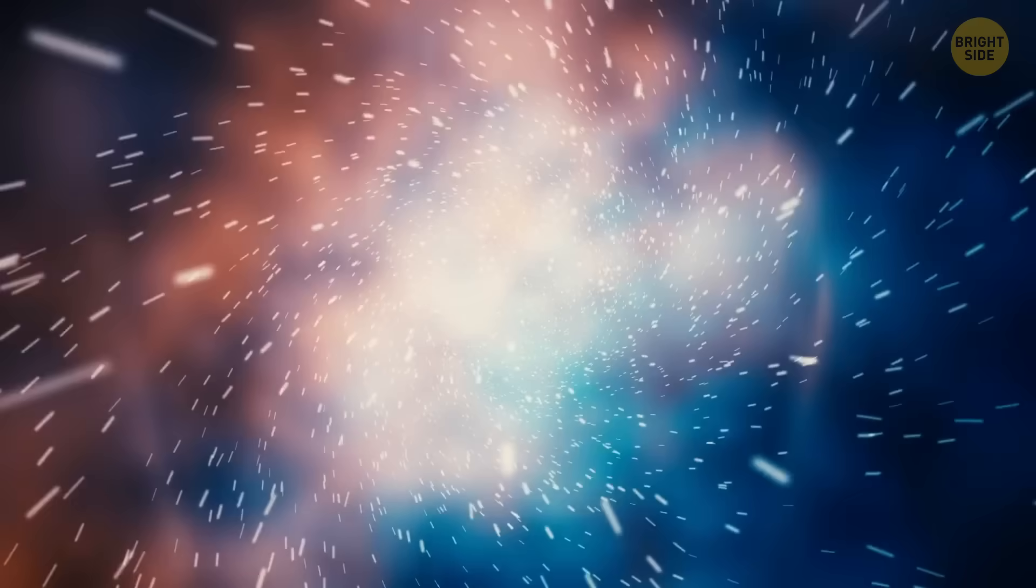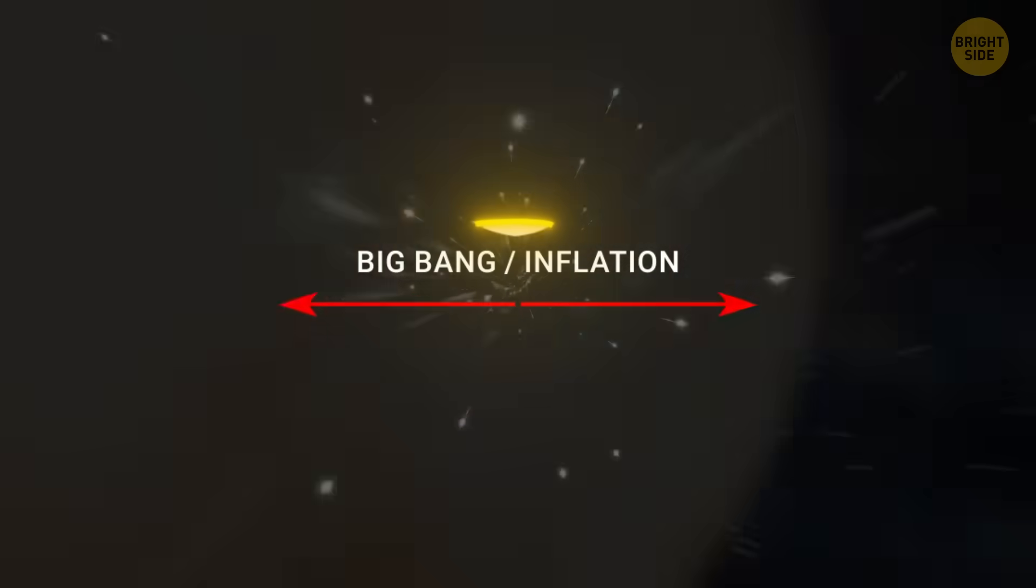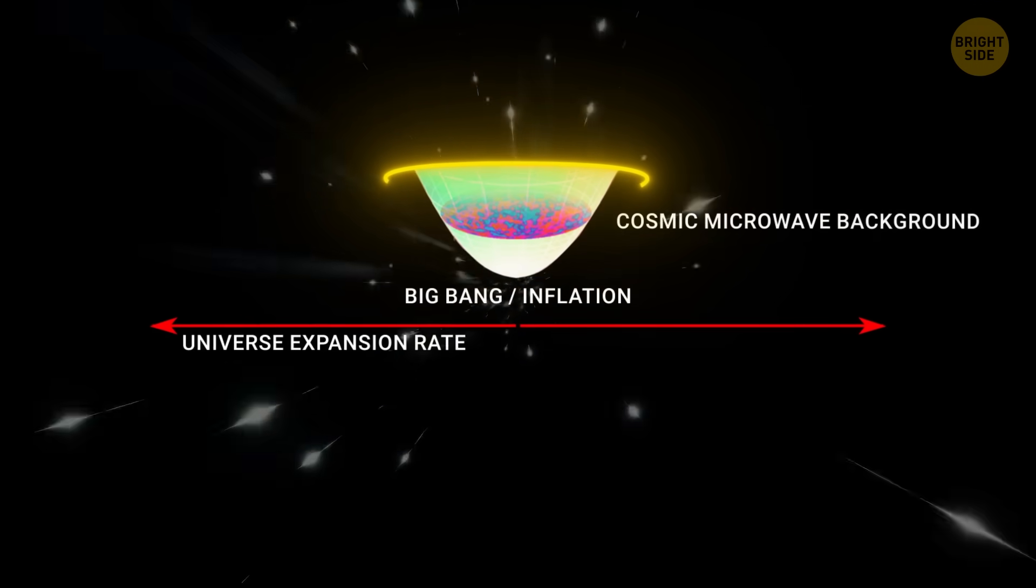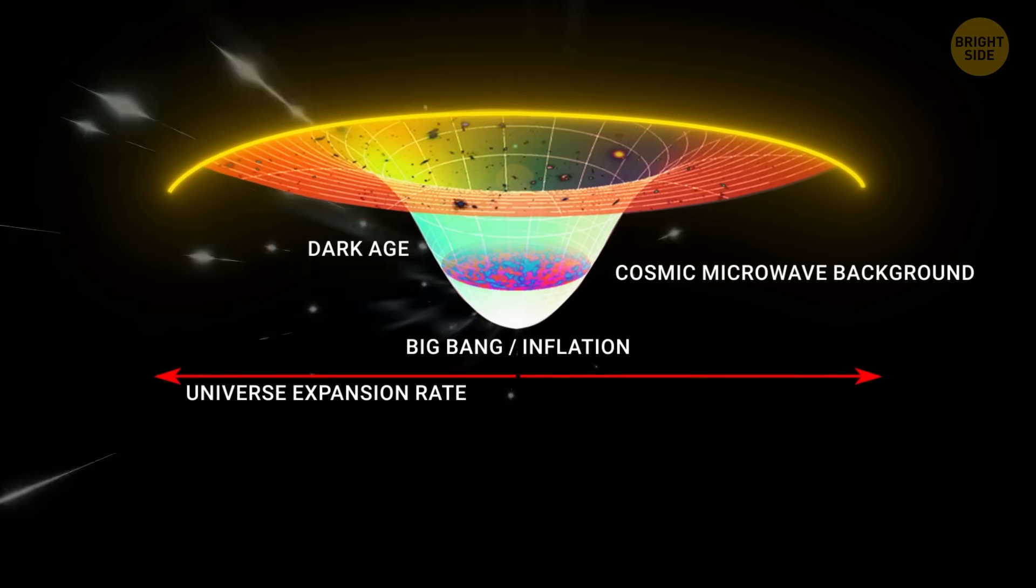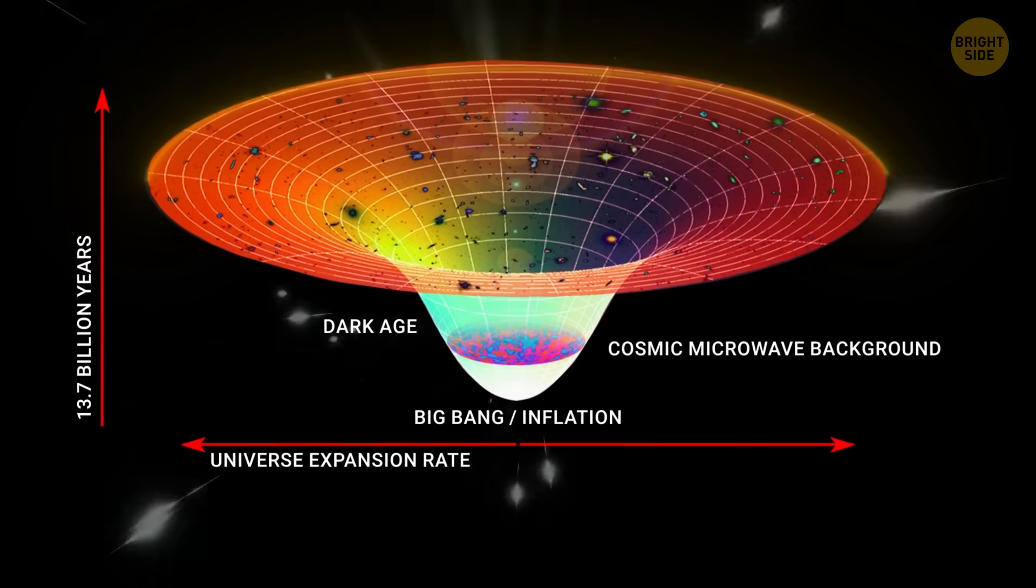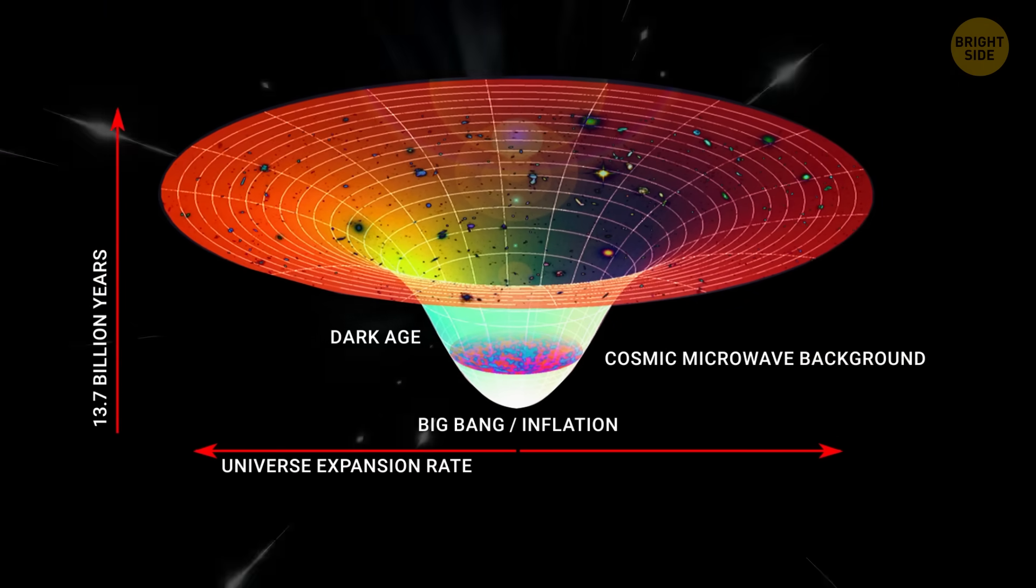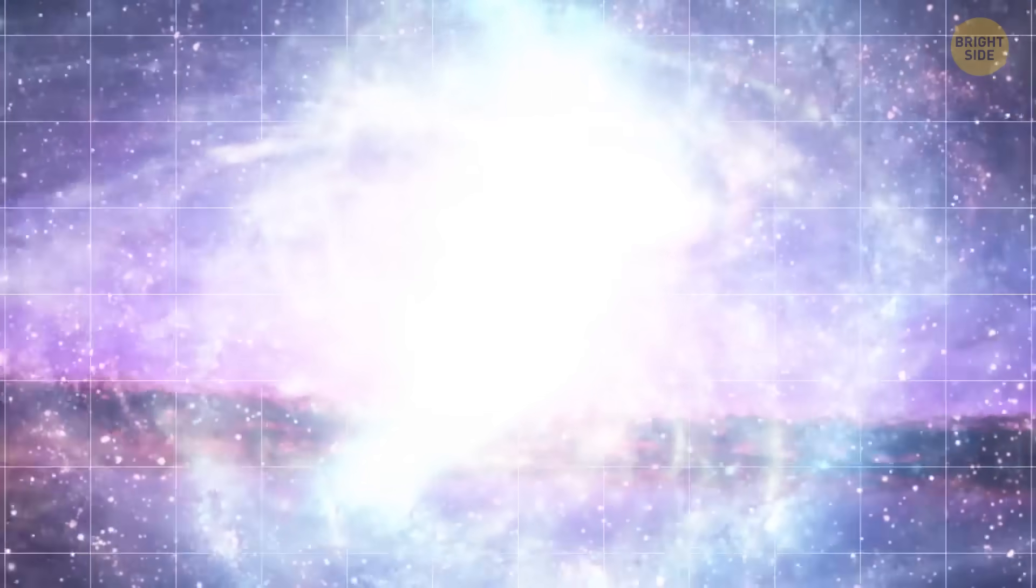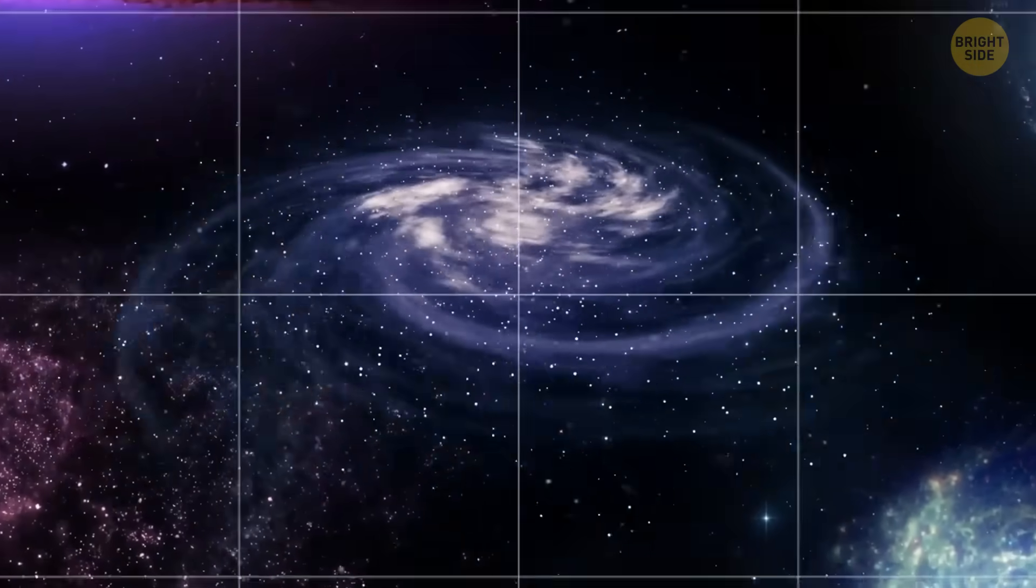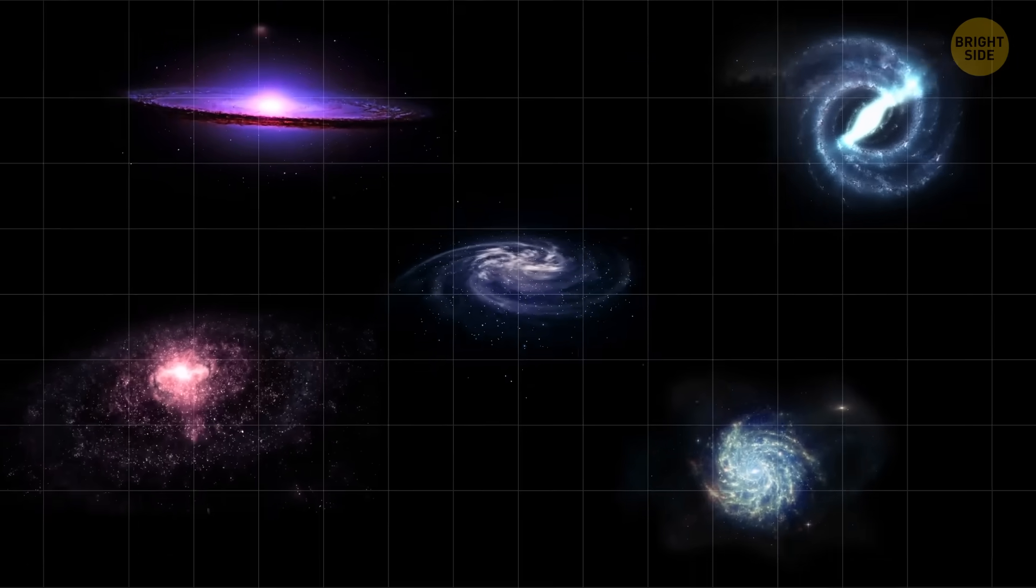This rapid expansion is called inflationary cosmology. It explains some big mysteries about our world. It tells us why it looks the same in all directions. Why the background radiation is evenly spread. Why galaxies are where they are, and so on. The details of how this cosmic inflation works are still a bit mysterious. But scientists are on it, and the theory itself is universally accepted.